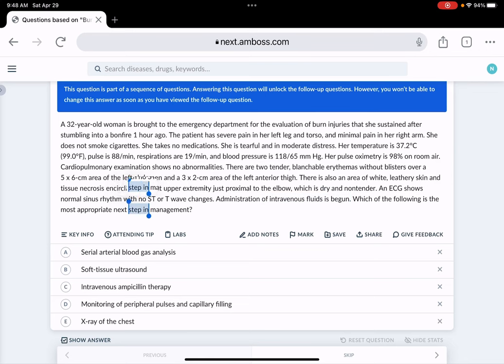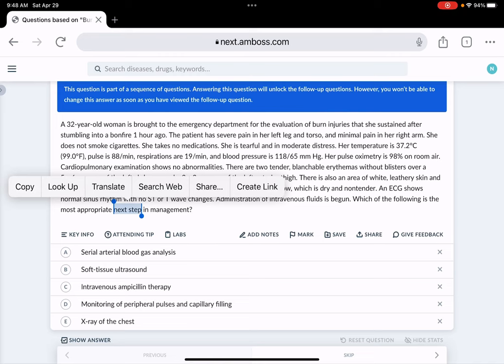The answer choices are serial arterial blood gas, ultrasound, IV antibiotics and bacitracin, monitoring of peripheral pulses and capillary filling for shock, or x-ray of the chest. Most of the answer choices here are considered additional investigations except C, which is IV antibiotics.